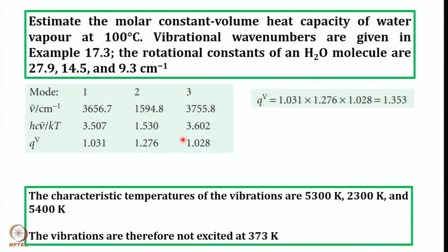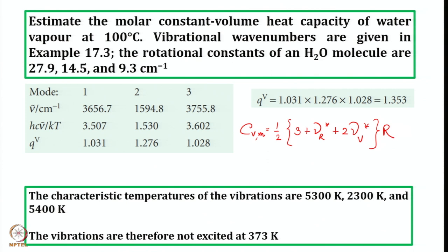C_Vm equals (1/2)(3 + ν_R* + 2ν_V*) R. We need to determine the values of ν_R* and ν_V*. Let us first talk about vibration, because vibrational energy levels are generally far separated, so their contribution may be very small. The first step is to calculate the characteristic vibrational temperature using H·c·ν̄ = k·θ_V.